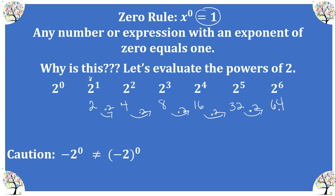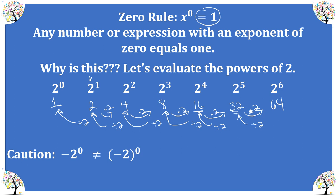Now let's work backward. Starting with 64 and using the inverse of multiplication, we divide. 64 divided by 2 is 32, 32 divided by 2 is 16, 16 divided by 2 is 8, 8 divided by 2 is 4, 4 divided by 2 is 2. Continuing the pattern, 2 divided by the base of 2 gives us 1. So two raised to the zero power is simply the base divided by itself, which always produces positive 1.